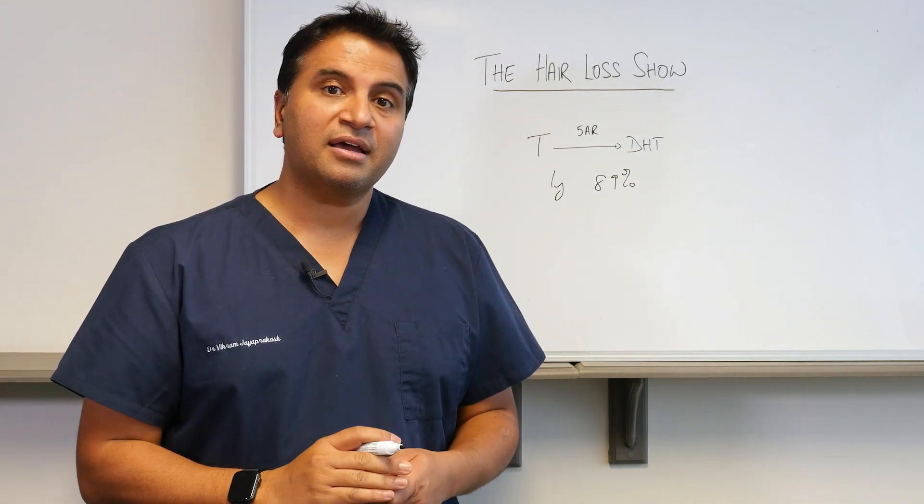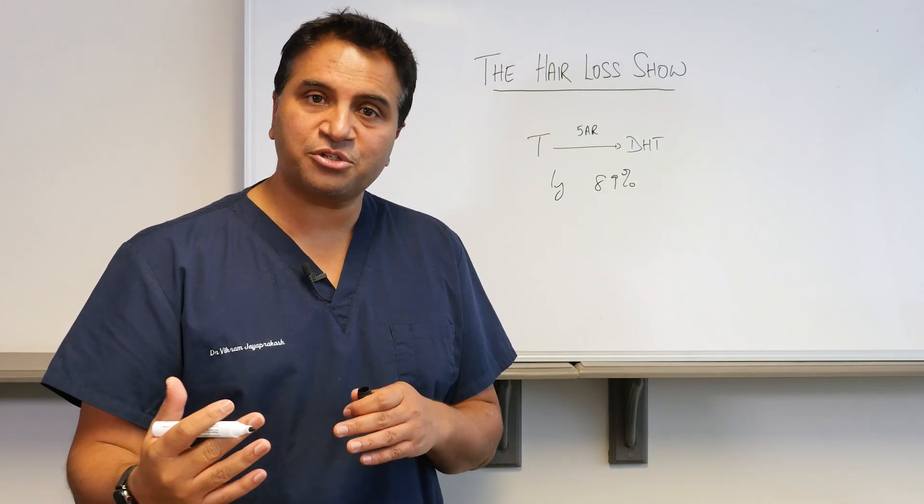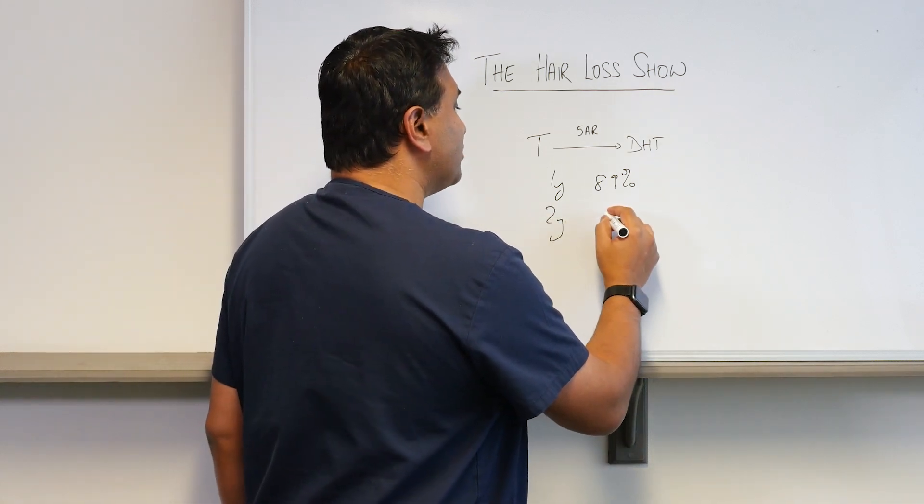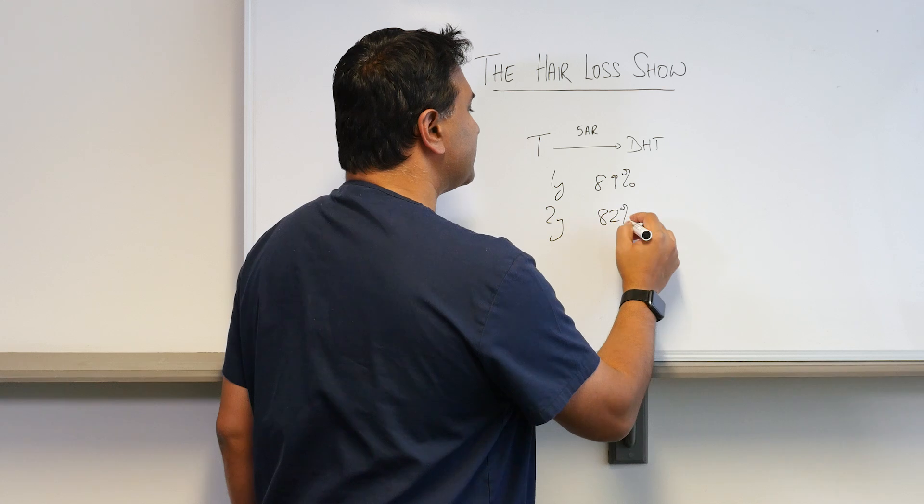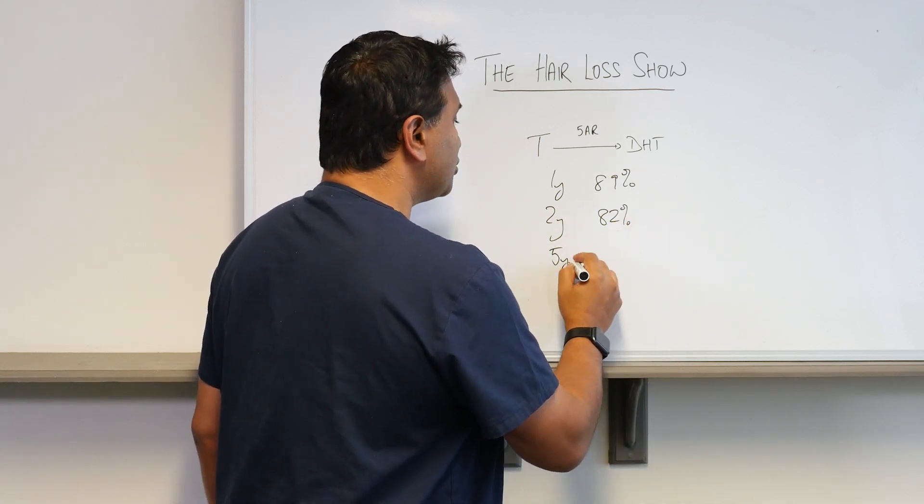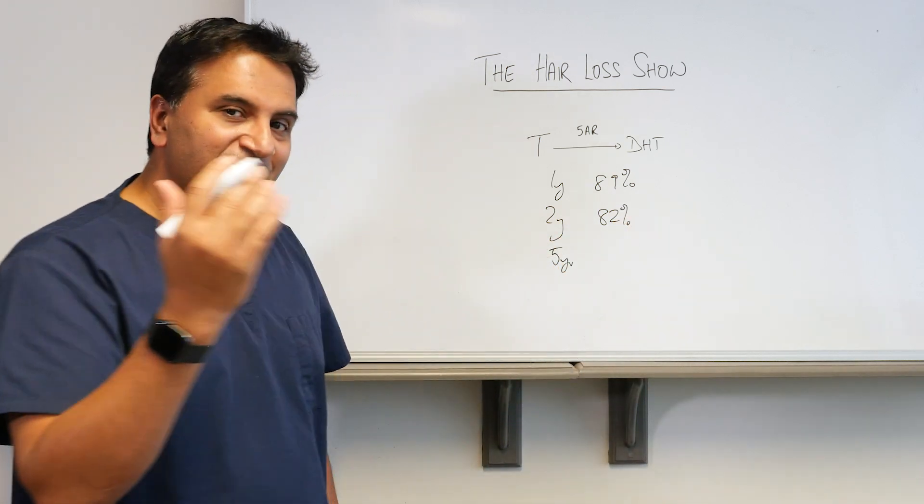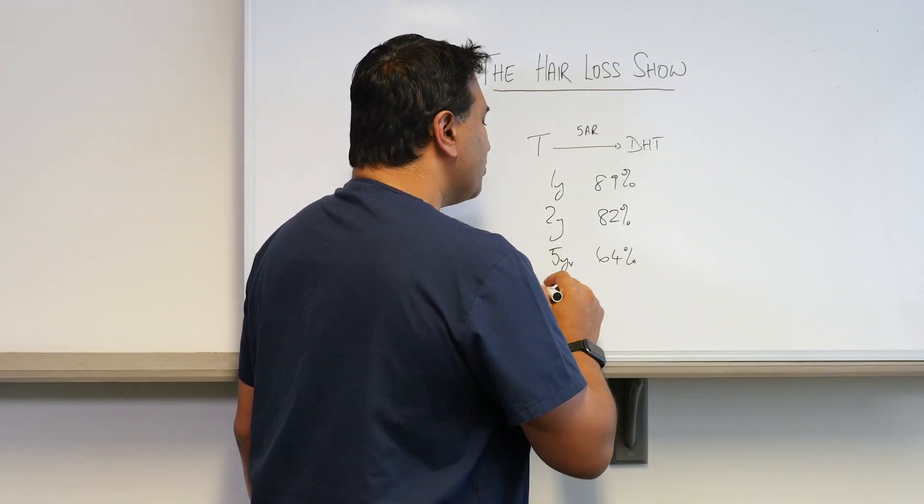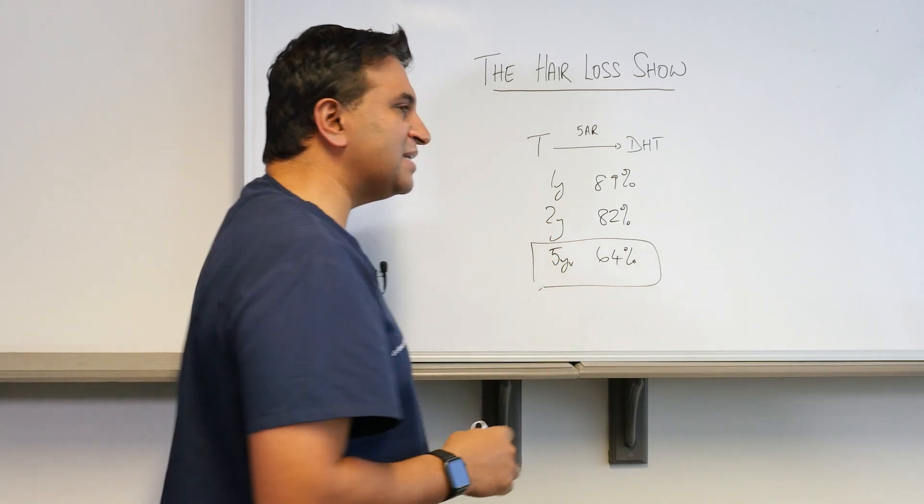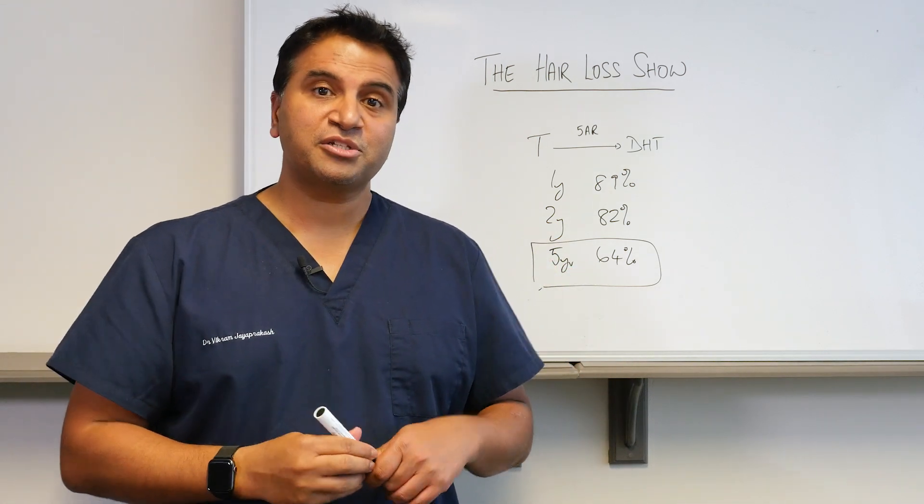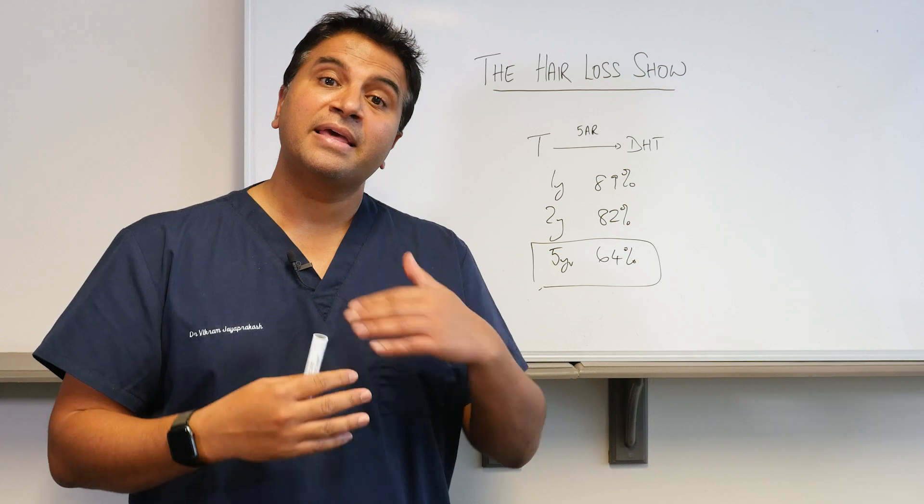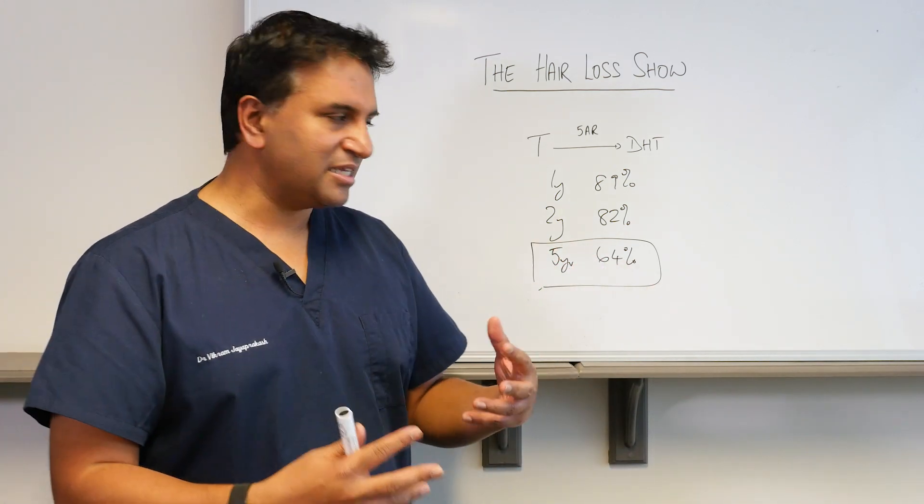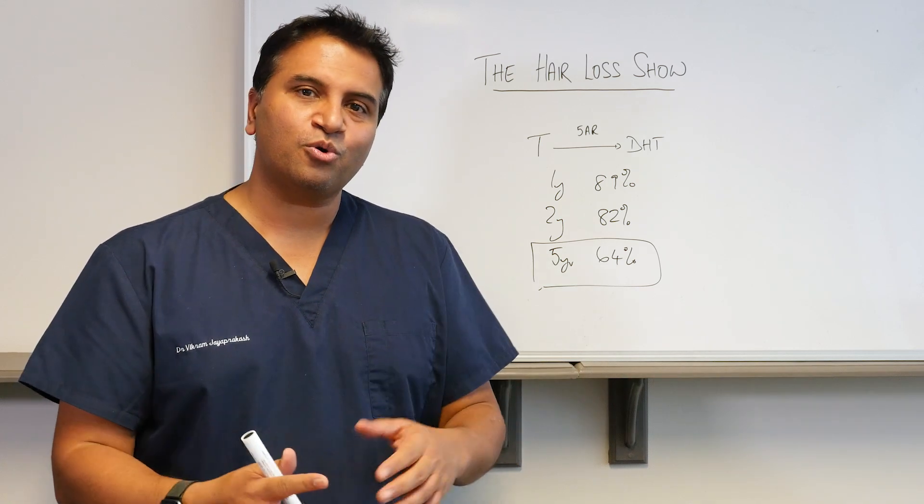At two years the effective rate drops down to 82%. At five years, which is all we've got figures for, it's down to 64%. So at five years you've basically got around two-thirds of patients taking that medication that will be stable. Now you may argue that doesn't sound very impressive, but what it tells me is that we haven't got the cure for hair loss.